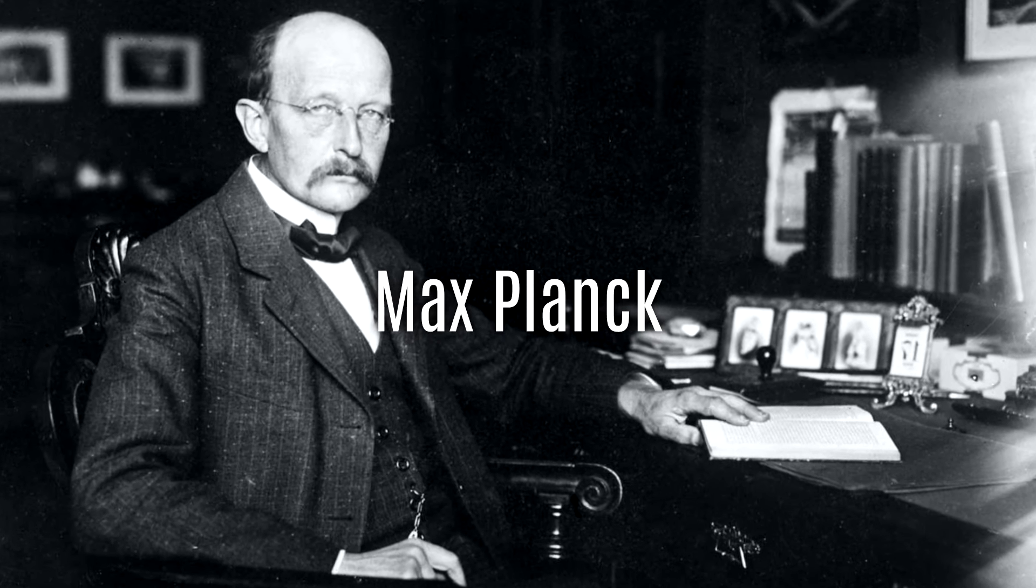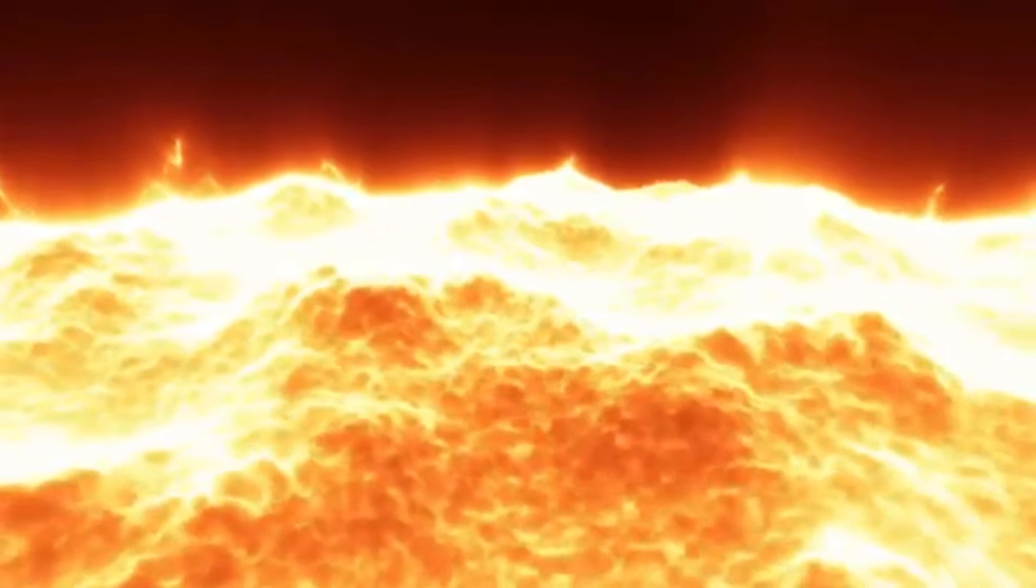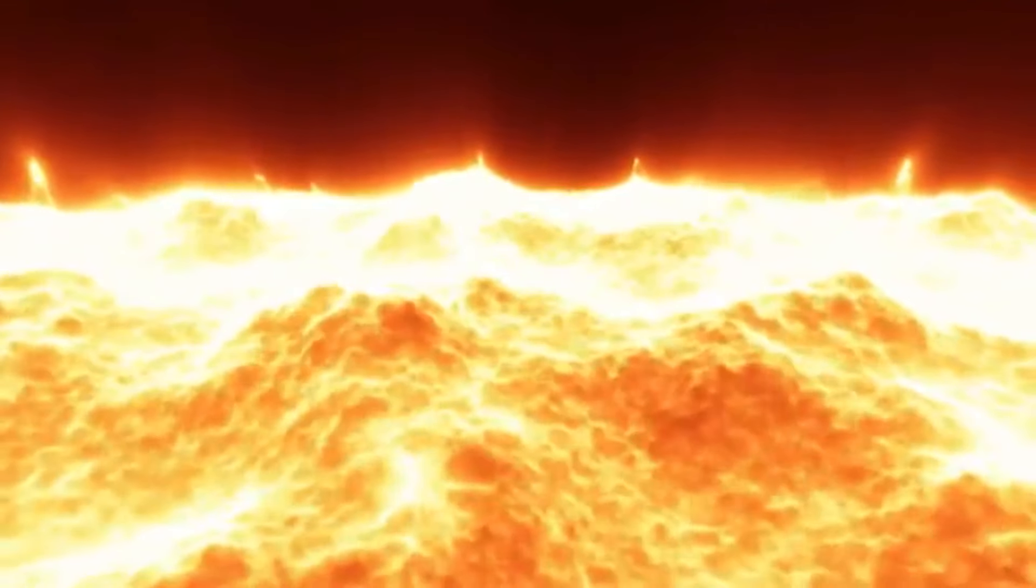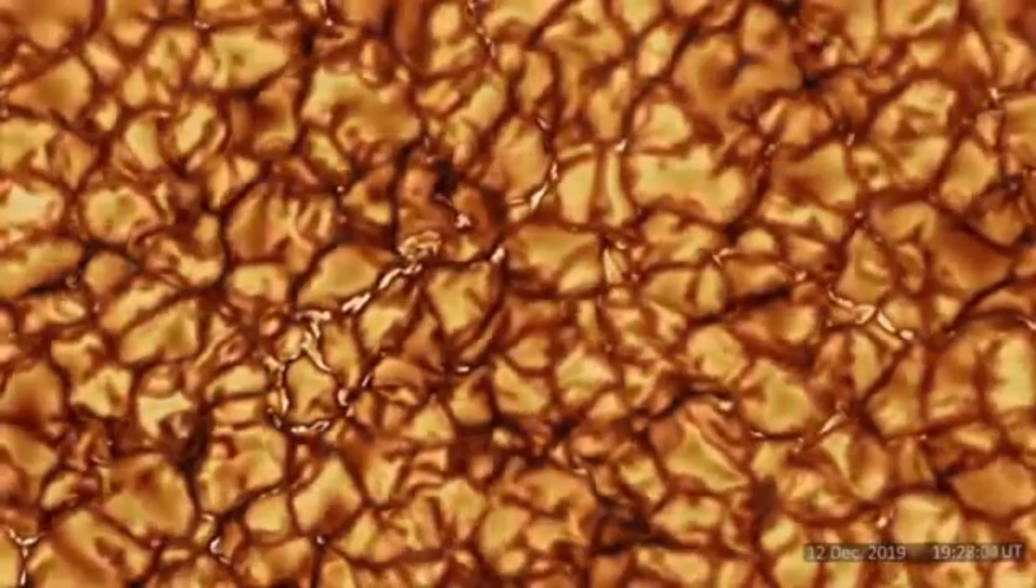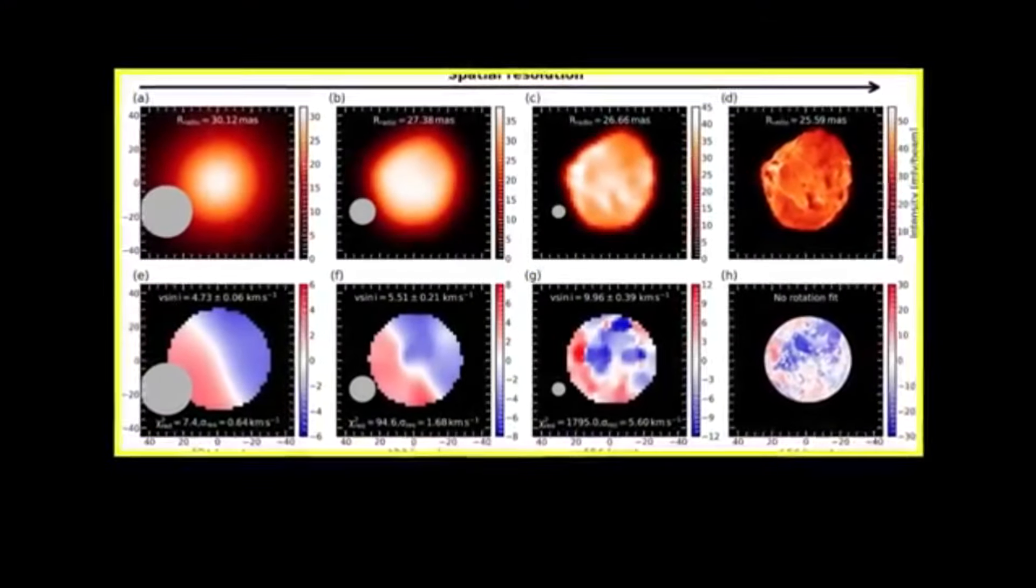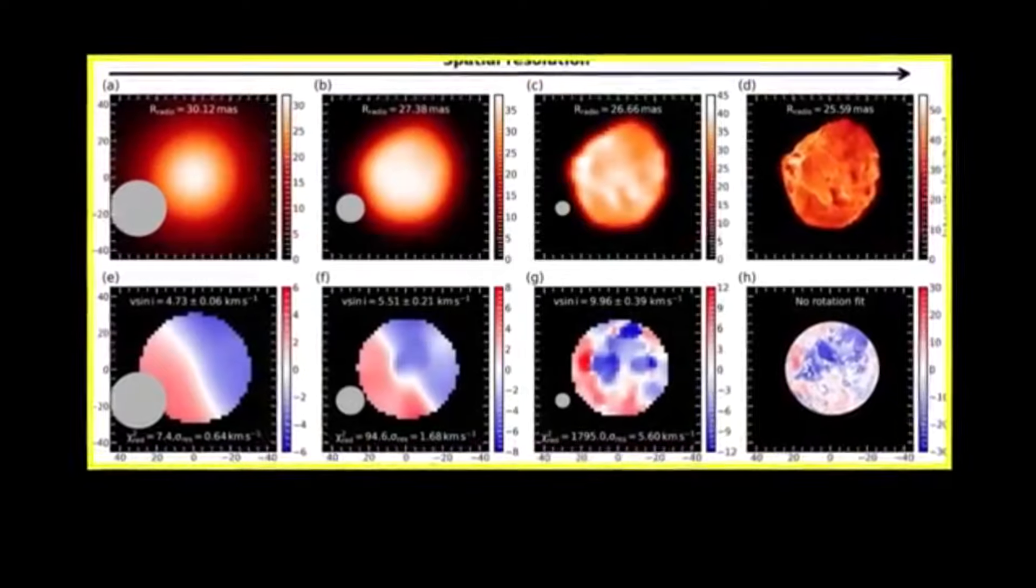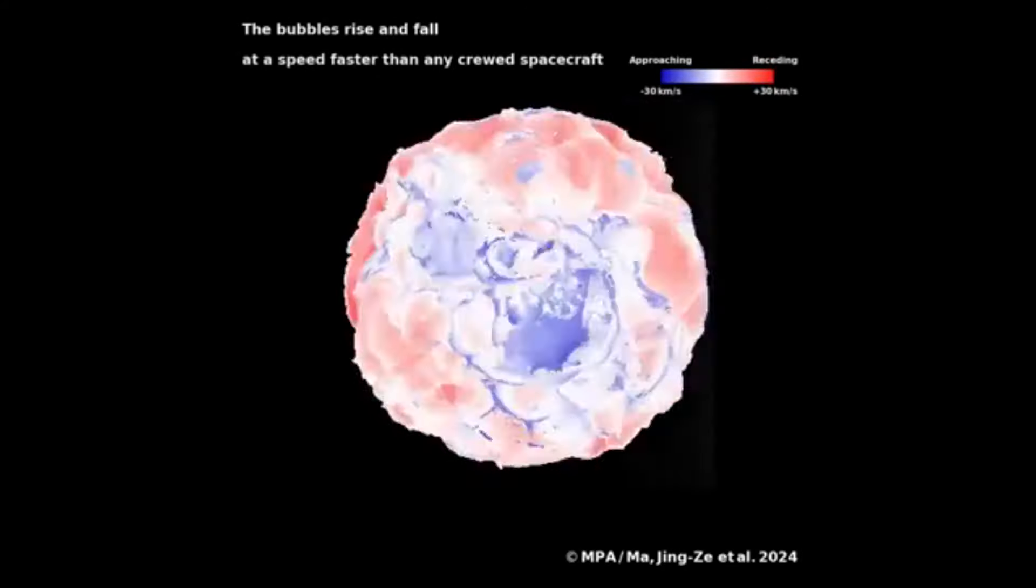Typically, stars tend to experience a decrease in rotational speed as they expand and move toward the later stages of their life cycle. However, Jing Zhu from the Max Planck Institute for Astrophysics in Garching, Bavaria emphasizes that Betelgeuse stands out as the only known red supergiant exhibiting such rapid rotation. This unusual speed is thought to be connected to the star's unique bipolar surface structure, where one hemisphere shows a blue shift and the opposite side displays a red shift, each shifting by several kilometers per second. To explain this intriguing rotational behavior, astronomers have proposed several theories.